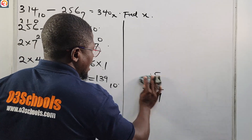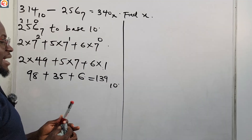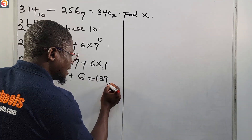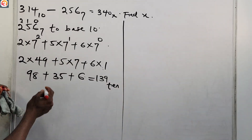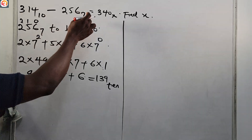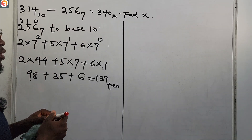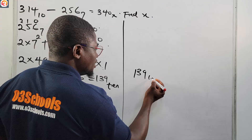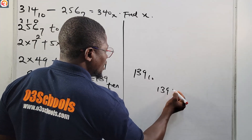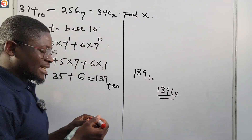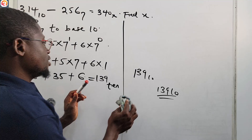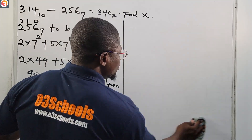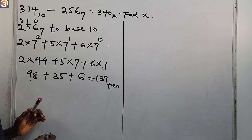It is always better to write bases in words with letters — say 'base 10', 'base seven' — because you can easily confuse 139 base 10 with the number 13910. You will not be looking for an answer that is not looking for you. These are common mistakes to avoid. If you write bases using numbers, you have to be extra careful.